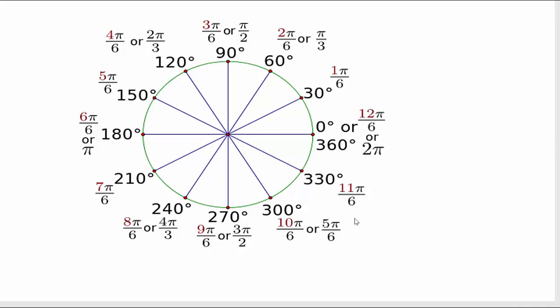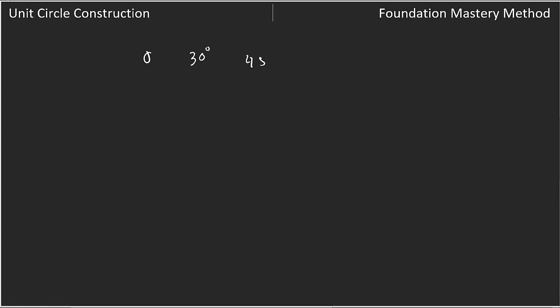Now we'll be talking about the unit circle. We have seen some important angles: 0, then 30 degrees, 45 degrees, 60 degrees, and 90 degrees. Or in radian measure you can say 0 radians, pi by 6, pi by 4, pi by 3, and pi by 2.